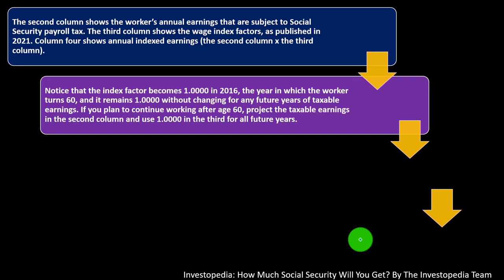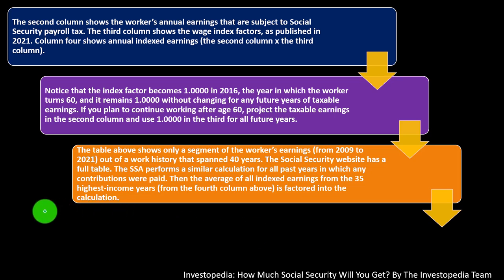So that's what they said — when it gets to age 60, it stays at one. If you plan to continue working after age 60, project the taxable earnings in the second column and use one in the third column for all future years. The table above shows only a segment of the workers' earnings from 2009 to 2021 out of a work history that spanned 40 years. You would expect the last few years to be your highest earning years unless you tapered off. The Social Security website has a full table.